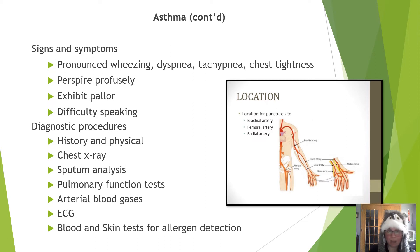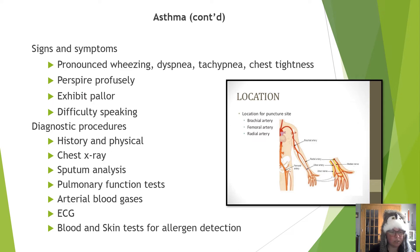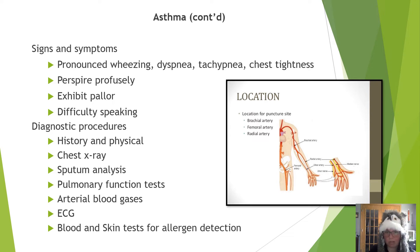So how do you know if someone's having an asthma attack? There tends to be pronounced wheezing, dyspnea, tachypnea, chest tightness, profuse perspiration, pallor, and difficulty speaking — if a person can't take a breath in, it's going to be hard to speak. Asthma is diagnosed with history and physical, chest x-ray, sputum analysis, pulmonary function test, arterial blood gases, ECG, and blood skin allergen detection test to find the trigger.